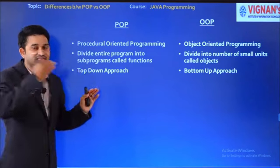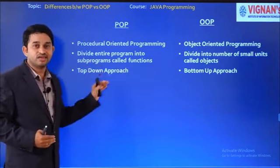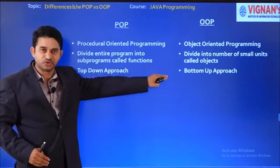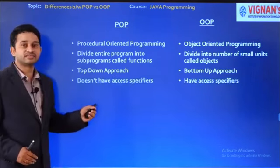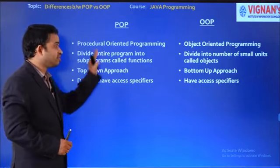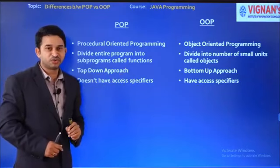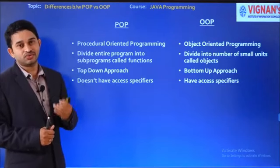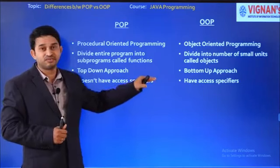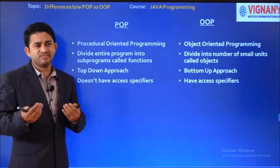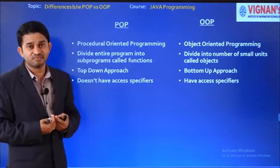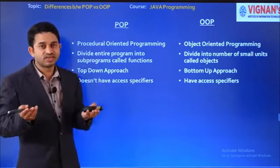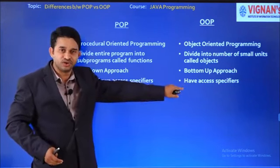In Java, we first write packages — equivalent to header files in C — then the main function, but the program depends mainly on objects, because whatever exists in the real world, we write our Java program based on that. The next important point: POP does not have access specifiers like public, private, and protected. These keywords are not available in procedure-oriented programming. Whereas in object-oriented programming, we have these specifiers, which provide security to our applications. For example, if someone hacks a Facebook account, it's due to lack of security — security provided by access specifiers like private. These access specifiers will be covered in unit two.